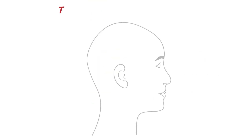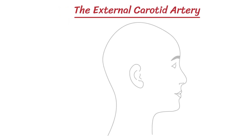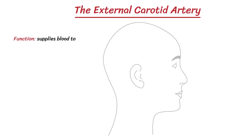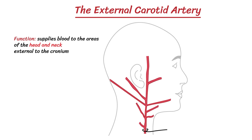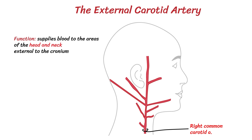Let's take a look at the external carotid artery, which supplies blood to the areas of the head and neck external to the cranium. After arising from the common carotid artery, it travels up the neck, passes behind the mandibular neck and in front of the lobule of the ear.